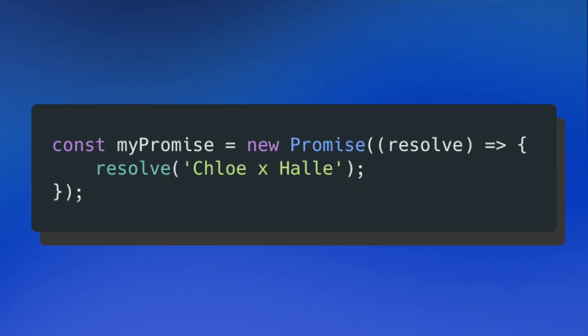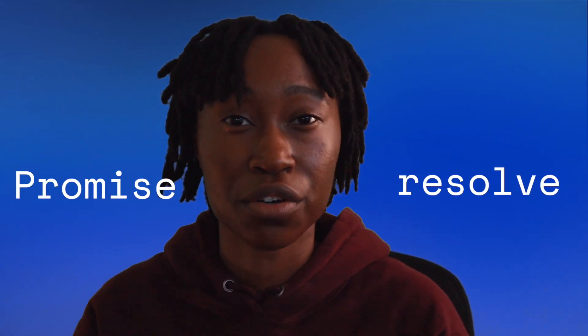If you're familiar with promises, the following code block isn't anything new. Here I create my promise using new promise, and then in my callback, I resolve the string 'Chloe and Hallie'. This piece of code is completely fine to use in your projects — it's expressive, and your code self-documents itself using declarative keywords like promise and resolve. But some could argue, including myself, that this code is a little too much on the eyes and introduces a lot of extra fluff.